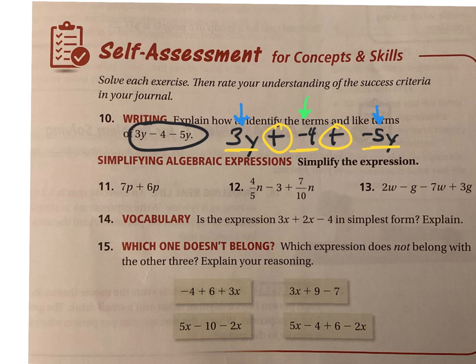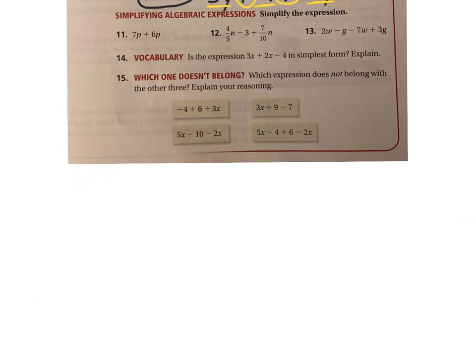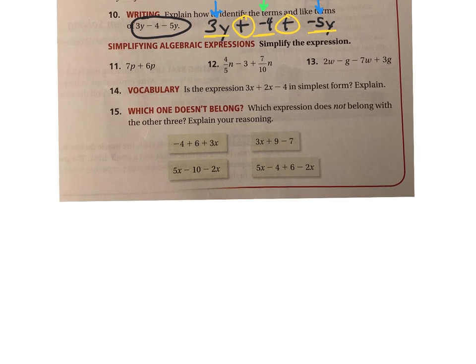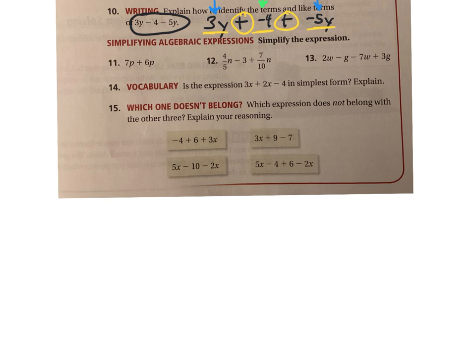Let's look at number 11. It says to simplify the algebraic expression. We have 7p plus 6p. Pretty straightforward — if you have 7p and then add 6p, you're going to have 13p. You have just these two terms, 7p and 6p, and they're like terms because they have the same variable, so you can just put them together.